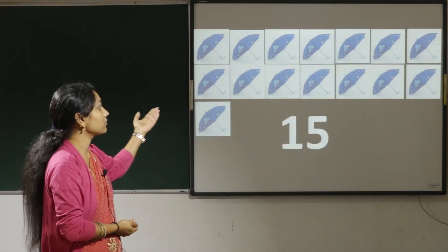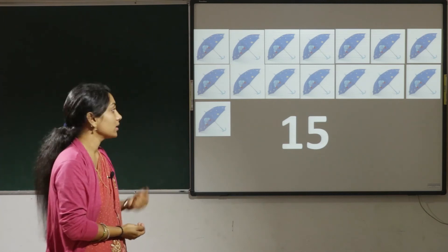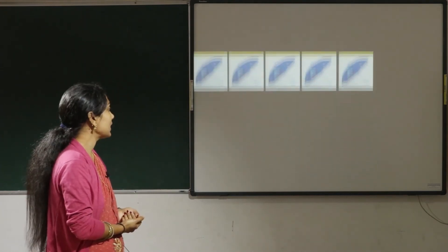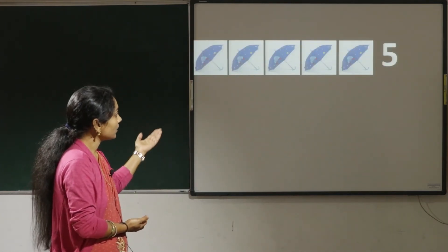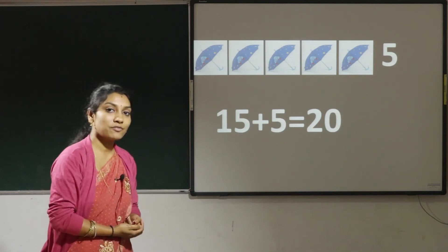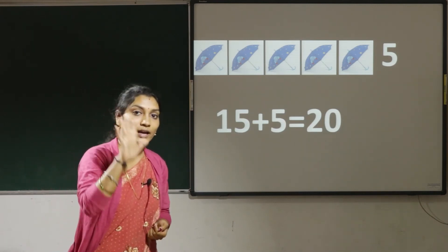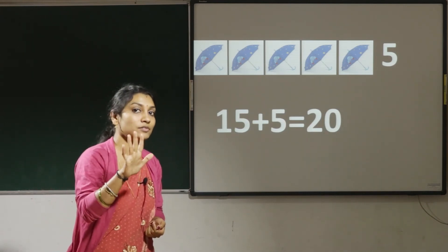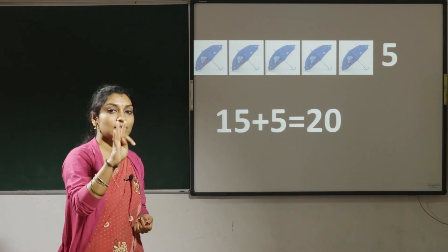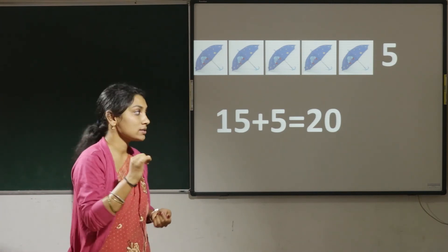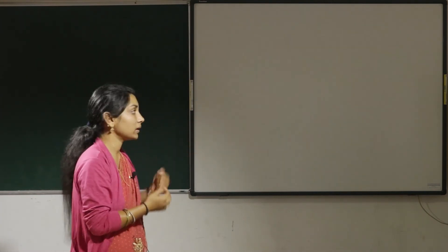Here there are 15 umbrellas. Let us add 5 more umbrellas to that. So 15 plus 5 — 15 in the mind, 5 in the hand. After 15: 16, 17, 18, 19, 20. So the answer is 20.